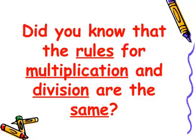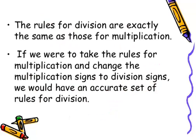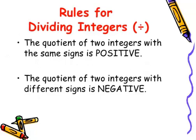Did you know that the rule for multiplication and division are the same? The rule for division is exactly the same as for multiplication — if you take the multiplication rules and change the multiplication signs to division signs, you have an accurate set of rules for division. Rule for dividing integers: the quotient of two integers with the same sign is positive; the quotient of two integers with different signs is negative.